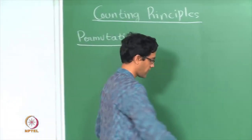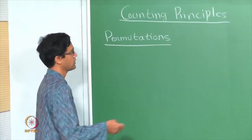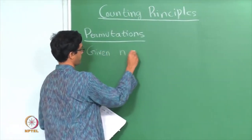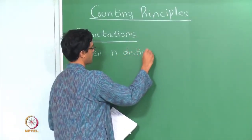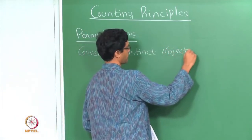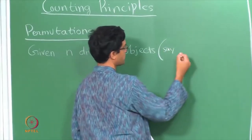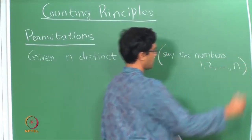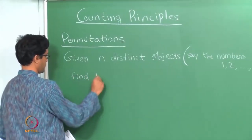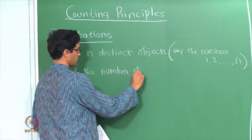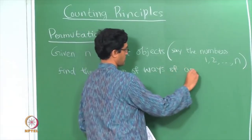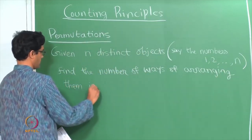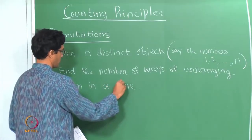So what is a permutation? It is a way of arranging n given objects in all possible ways. Given n distinct objects, where n is some natural number 1, 2, 3 and so on, it is often convenient to think of those n objects as just being the numbers 1 to n.